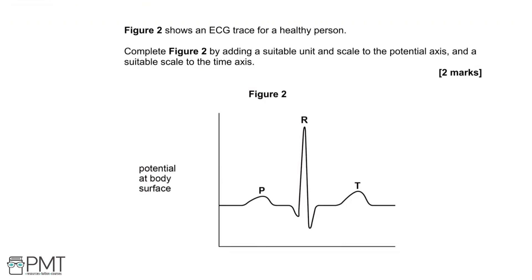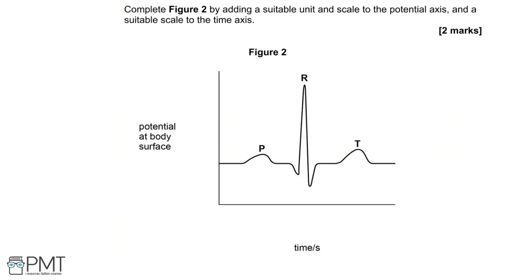Figure 2 shows an ECG trace for a healthy person. Complete the figure by adding a suitable unit and scale to the potential axis, and a suitable scale to the time axis. The potential is measured in millivolts — remember this for the exam. The line starts at zero millivolts and the highest peak at R is just below one millivolt. For the time axis, a complete ECG cycle is typically about 0.6 seconds, so start at zero and go up to 0.6 seconds, though slightly higher is acceptable as long as it's not above one. Two marks.